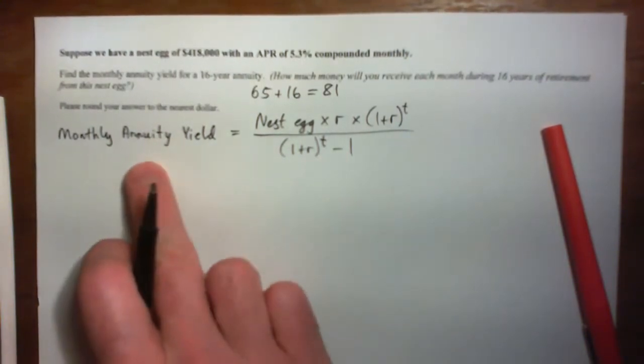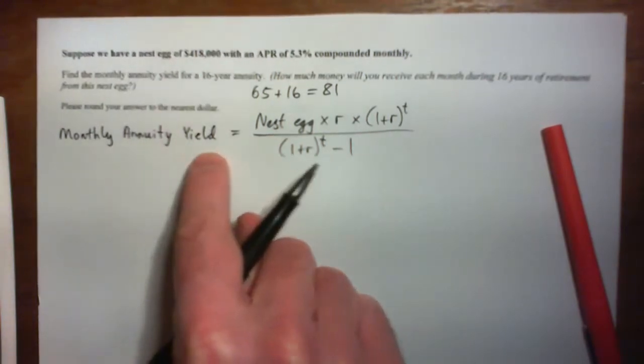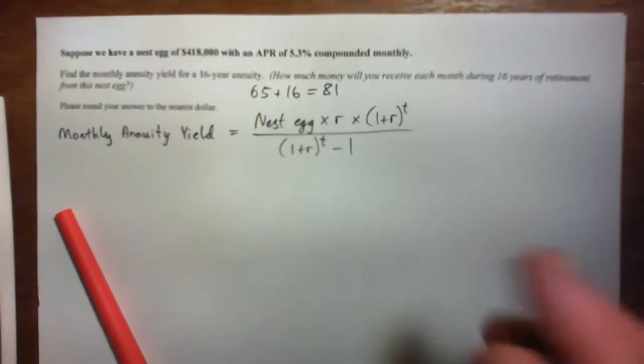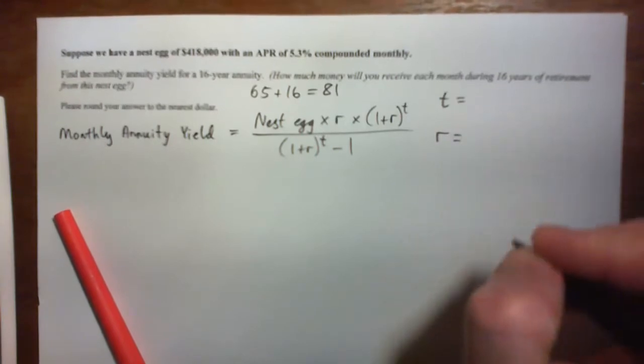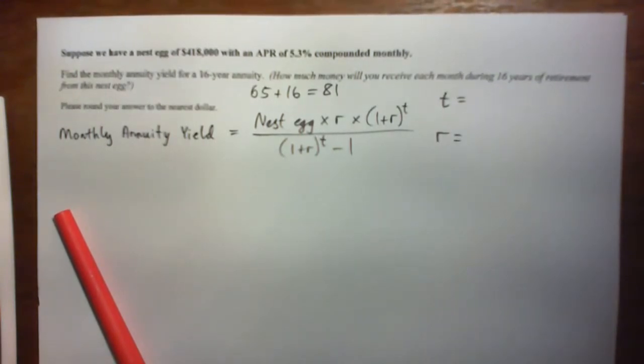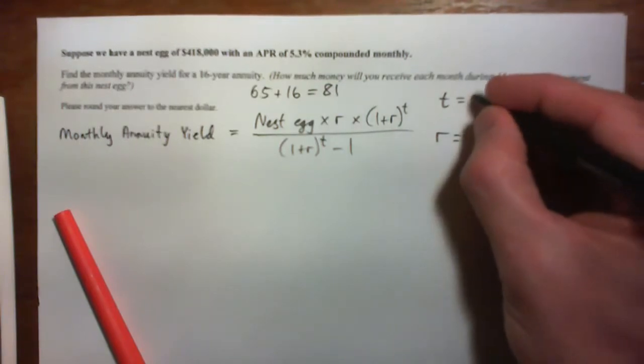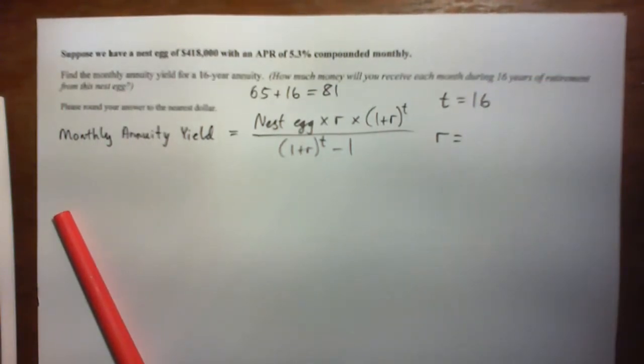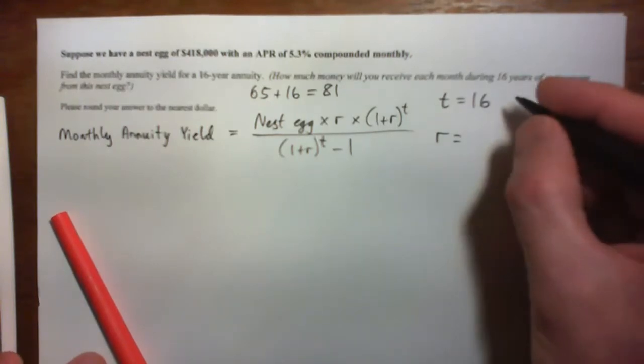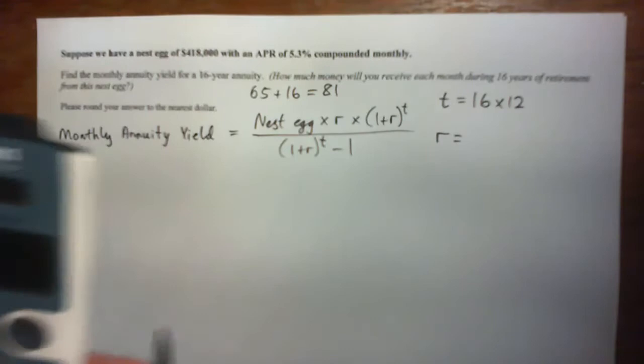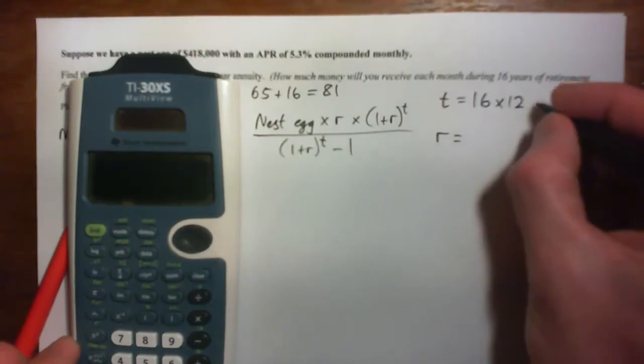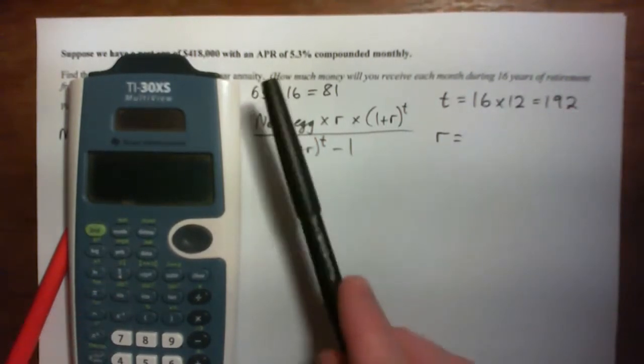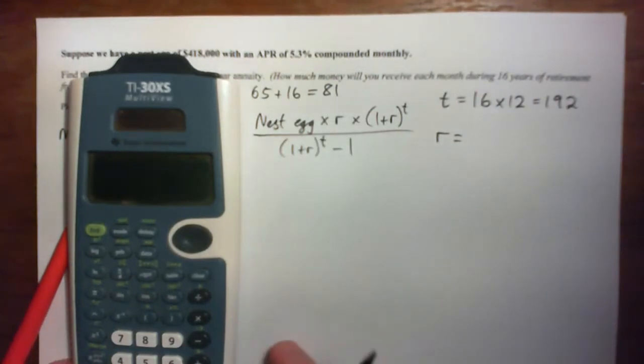We've got to use this formula here. Monthly annuity yield equals nest egg times this. So we've got to find our T, our number of payments, monthly payments, and our monthly interest rate R. So can you find T? T is going to be 16 years. You're going to get these monthly payments for 16 years from when you're 65 to when you're 81. So we go 16 times 12 because in each year there's 12 months. That's 192 monthly payments from age 65 to 81 over the course of your retirement.